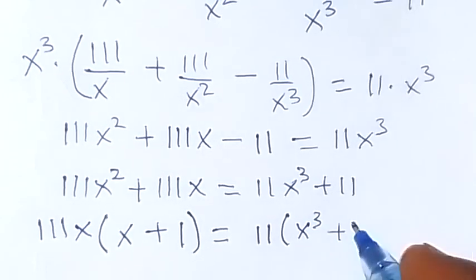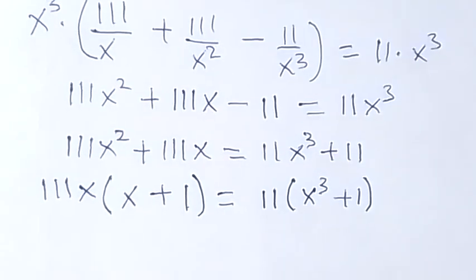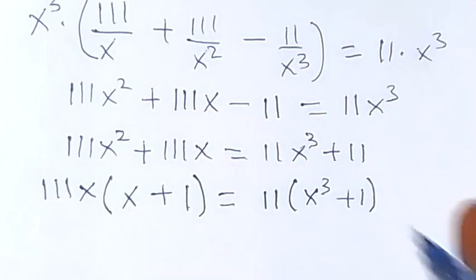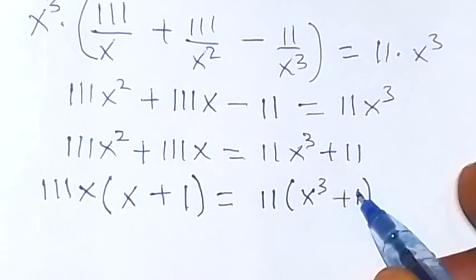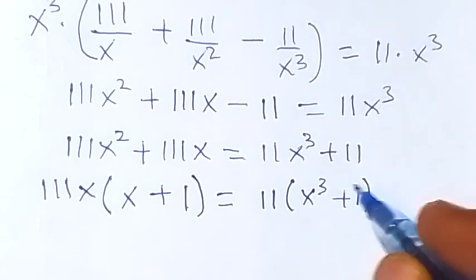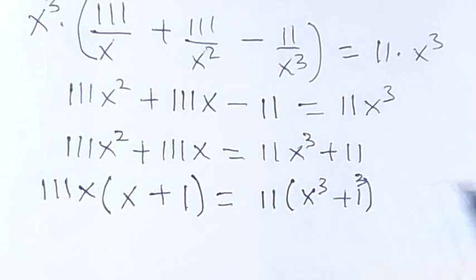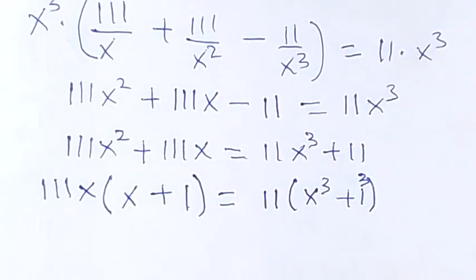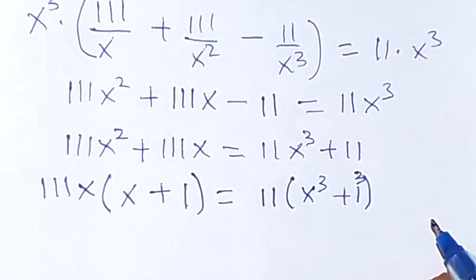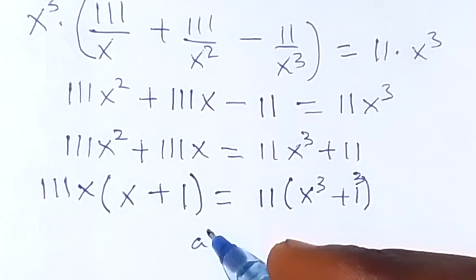That equals 11 times bracket x raised to power 3 plus 1. We can also write x raised to power 3 plus 1 as x raised to power 3 plus 1 raised to power 3, since 1 cubed is still 1.